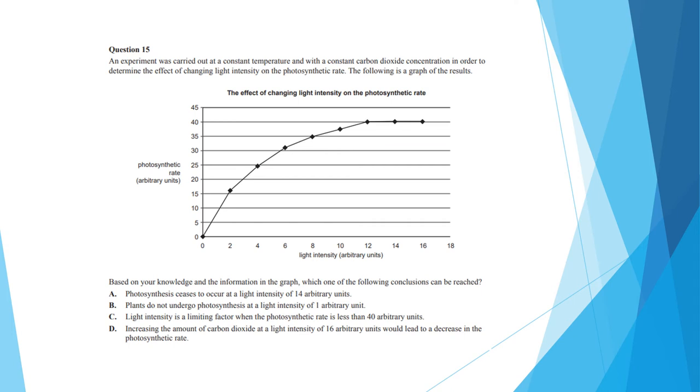Question 15 is another experiment where they are assessing the effect of light intensity on the photosynthetic rate. They have also stated which variables they have kept controlled, in this case the temperature and carbon dioxide concentration. And then based on your knowledge and information in the graph, they ask you which of the following conclusions can be reached. Here the correct statement is C, that when the rate is less than 40 arbitrary units, light intensity is a limiting factor. Option A is incorrect because at 14 arbitrary units of light intensity, photosynthesis is still occurring at 40 arbitrary units. Option B is incorrect because as you can see on the graph, photosynthesis does occur at a light intensity of one arbitrary unit. And you can't really make the conclusion stated in option D because this experiment did not test for it.